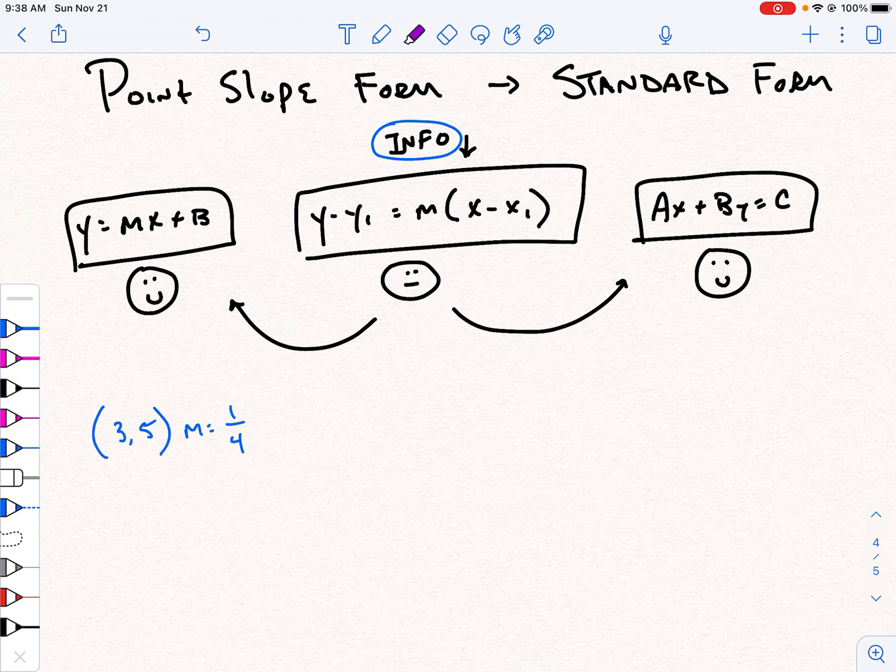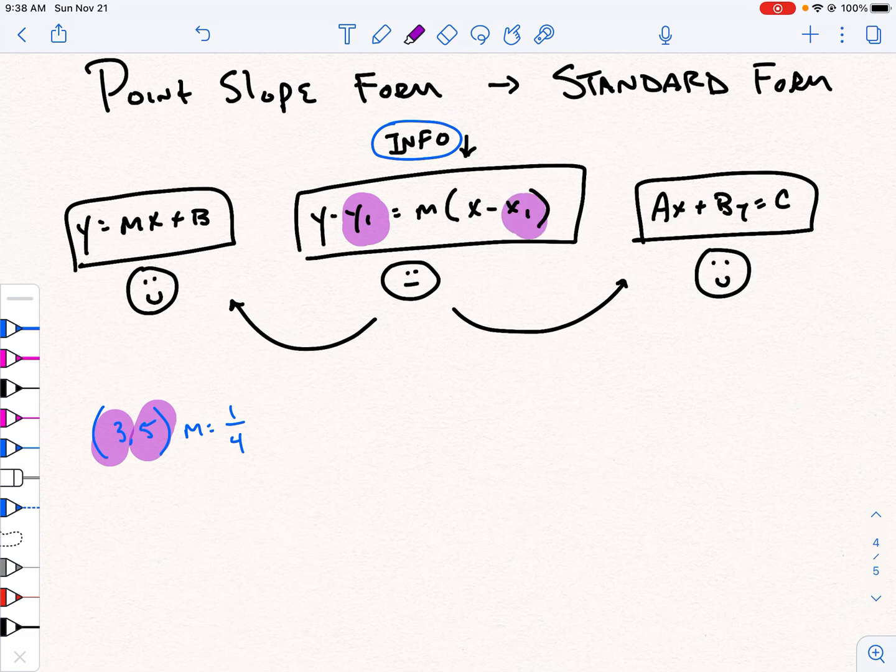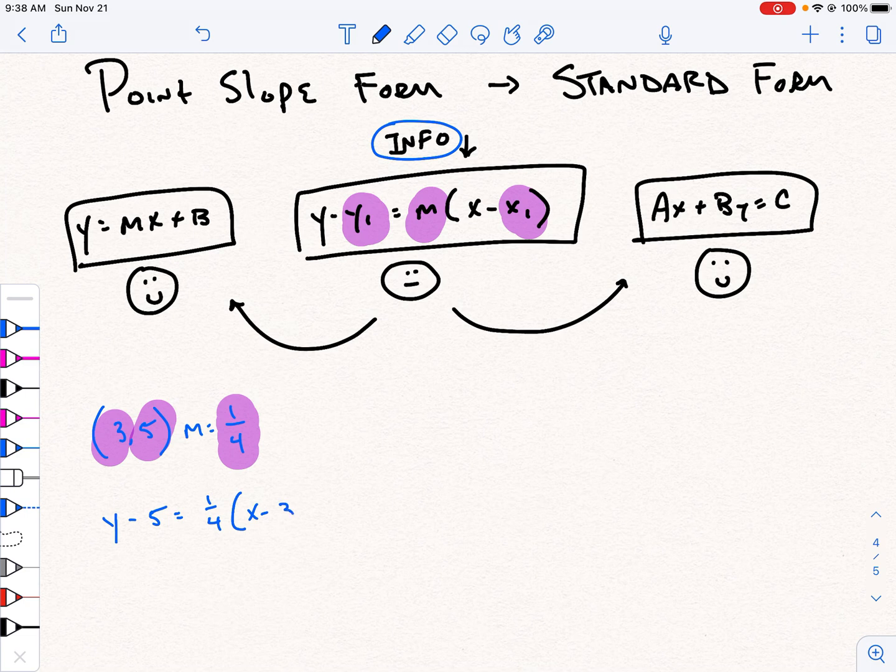I'm going to go ahead and substitute my 5, which is my first y. And I'm going to substitute my 3, which is my first x. And I'm going to substitute my slope into the slope. And we're simply going to plug those numbers into this equation. So I'm going to have y minus 5 equals 1 fourth times the quantity x minus 3. All right, so now I've taken my information and I've made it into an equation.